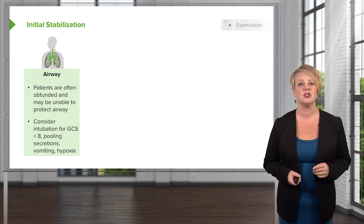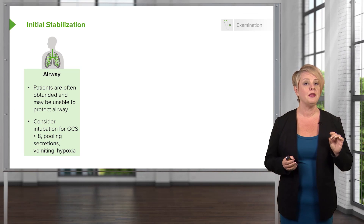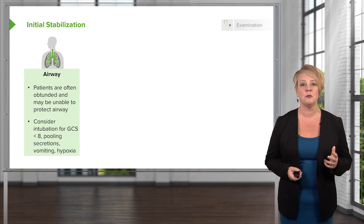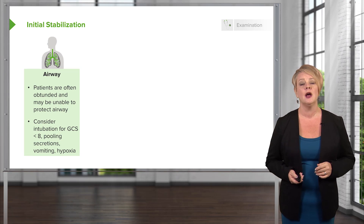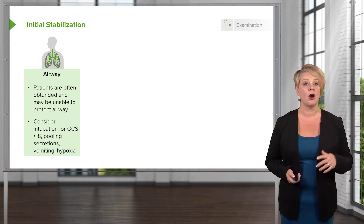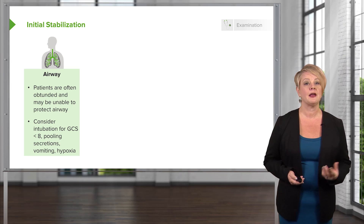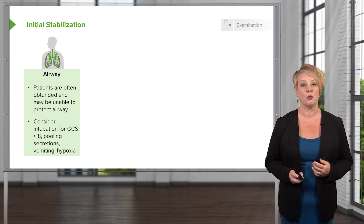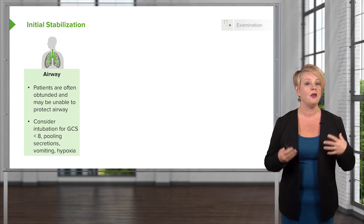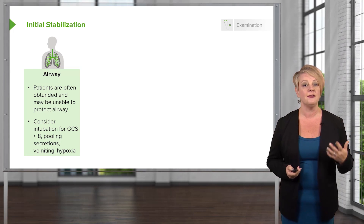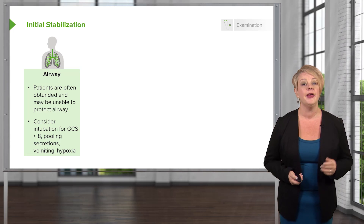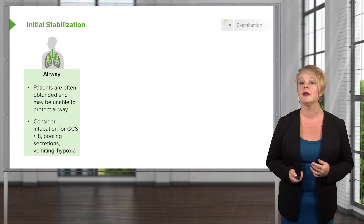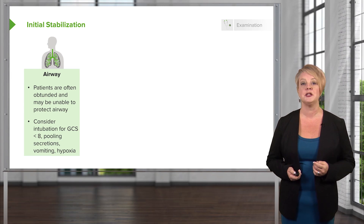The ABCs are important for every patient in emergency medicine, but with poisonings they're especially important because it's very common that patients are obtunded and unable to protect their airway, and we really need to think about intubating them. Anytime the patient has a GCS of less than 6, pooling of secretions, vomiting, or hypoxia, we really want to think about intubating early.